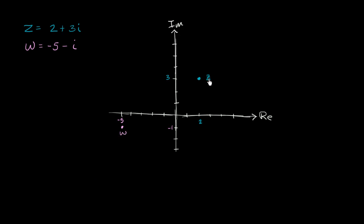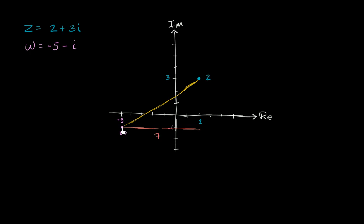We can think about the distance between these two complex numbers on the complex plane — really just the length of the line connecting them. To figure that out, we use the Pythagorean theorem, which is the basis of the distance formula in two dimensions. Let's think about how much we've changed along the real axis. Going from w to z, we go from negative 5 to 2 along the real axis. Two minus negative 5 is 7, so the length of that side is 7.